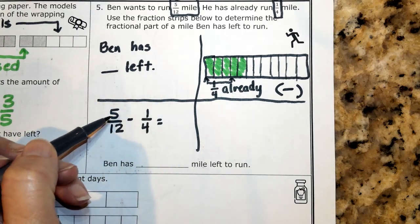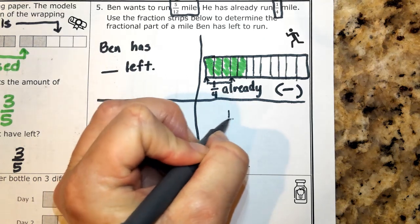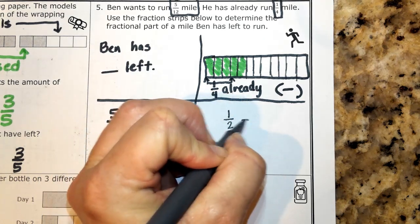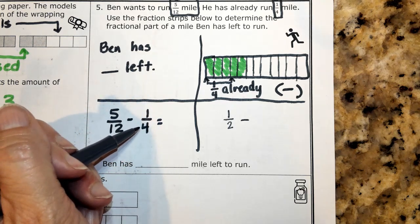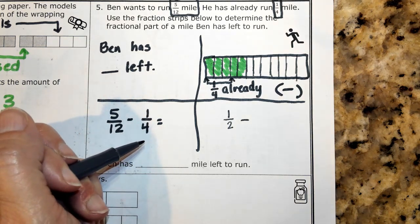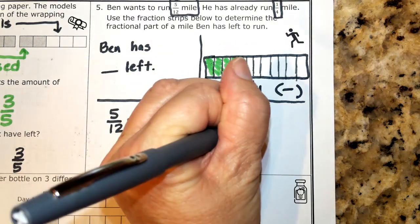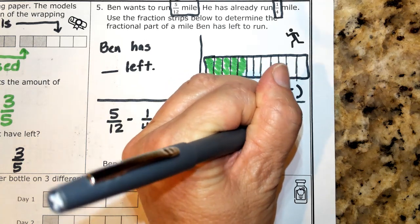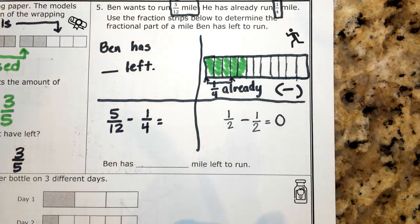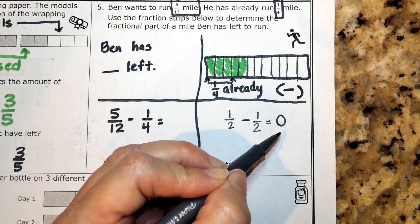So 5 twelfths is pretty close to 6 twelfths, and 6 twelfths is about 1 half. A fourth is on its way to being a half. And so if I've labeled this a half, then that means I'm going to have a very tiny amount left. So what that tells me is, when I get my answer, it should be pretty close to zero.